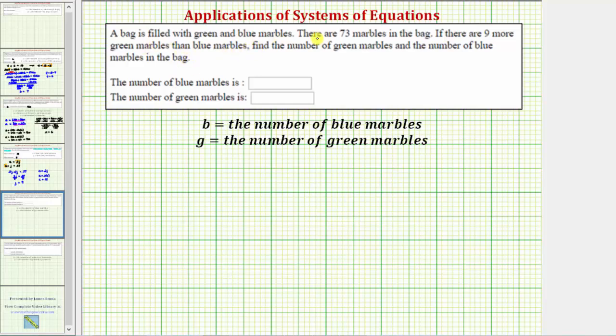A bag is filled with green and blue marbles. There are seventy-three marbles in the bag. If there are nine more green marbles than blue marbles, find the number of green marbles and the number of blue marbles in the bag.